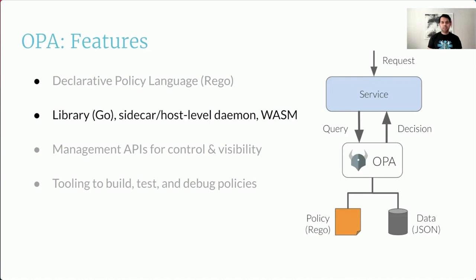OPA is written in Go. You can deploy it as a sidecar or a host-level daemon. You can embed it inside your Go code. You can also compile your Rego policies into Wasm and use those executables to answer your queries. It's designed to be as lightweight as possible — all the policies and data it needs for evaluation are stored in memory. You can think of OPA as a host-local cache for your policy decisions. OPA does not have any runtime dependencies, meaning it does not need to contact an external service or database to make a policy decision.